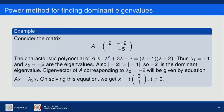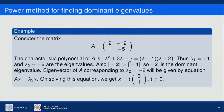For example, consider this 2 by 2 matrix. The characteristic polynomial is lambda squared plus 3 lambda plus 2, with zeros at lambda 1 = -1 and lambda 2 = -2. Since the absolute value of -2 is greater than the absolute value of -1, minus 2 is the dominant eigenvalue of this matrix, and the corresponding eigenvector is [3, 1].